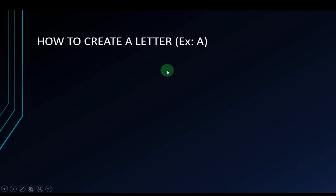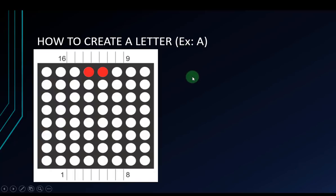Now I will give you an example to create a letter on the LED matrix. I'll create the letter A. This is the LED matrix, and if you want to create a letter A, you have to create it one row at a time.